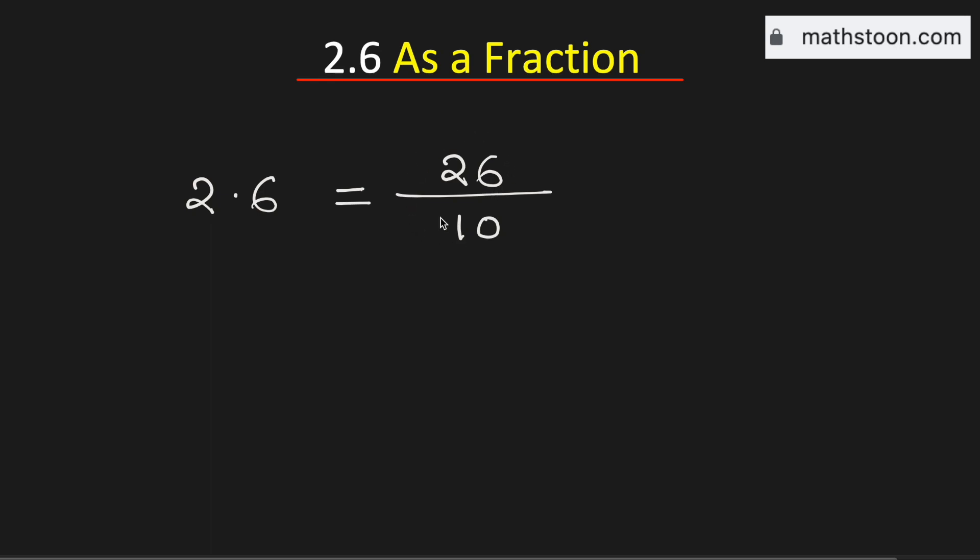Now we will simplify it. We know that 26 is written as 2 times 13, whereas 10 can be written as 2 times 5. So we can cancel these two, and this is now equal to 13 over 5.